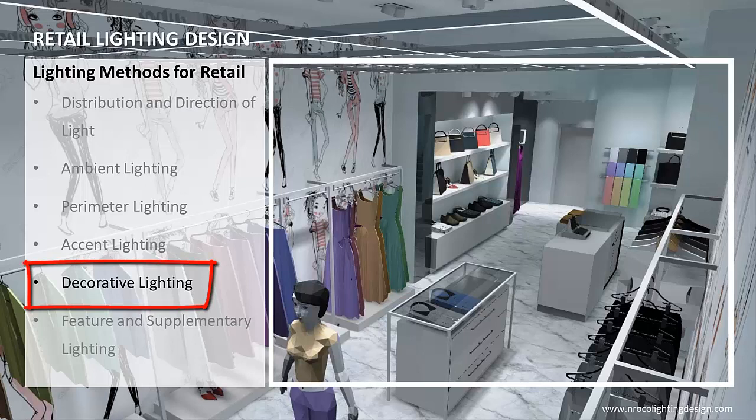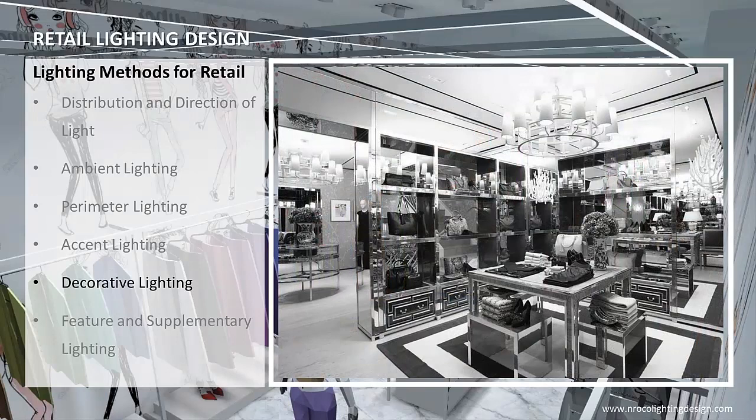Decorative lighting elements include sconces, chandeliers, table and floor lamps, torchieres, light sculpture, and light art or graphics. Decorative lighting is used in the retail merchandise environment to create ambience and set the mood for a shopping experience. It is used primarily in specialty stores, high-end department stores, and designer boutiques. Decorative lighting must not compete or detract from the primary merchandise lighting scheme.